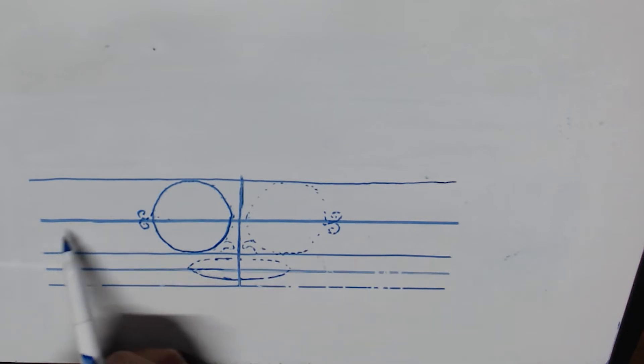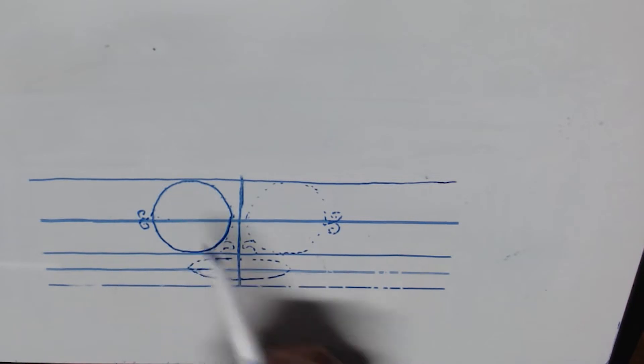And in the middle I just place an axis to have the middle of the rounds. Okay. And I know that the eyes and the nose are aligned.